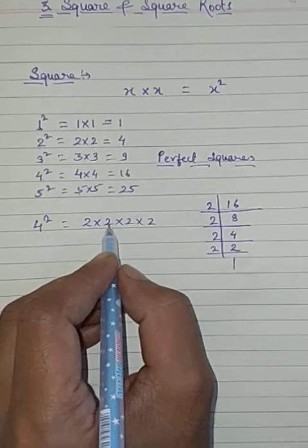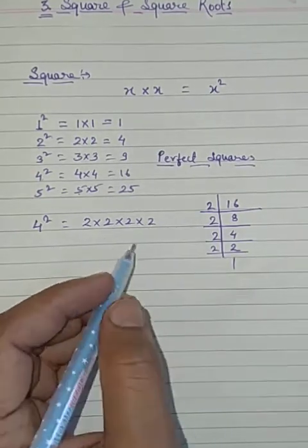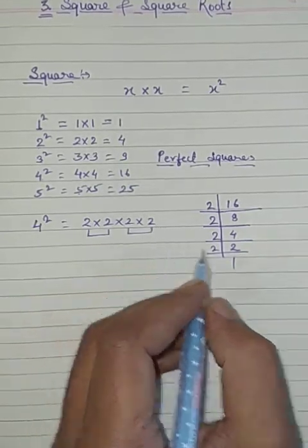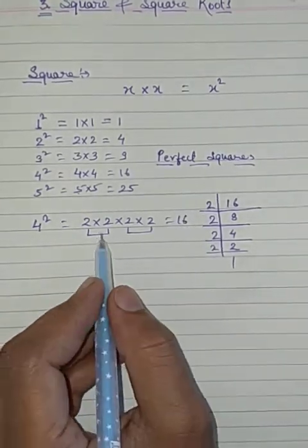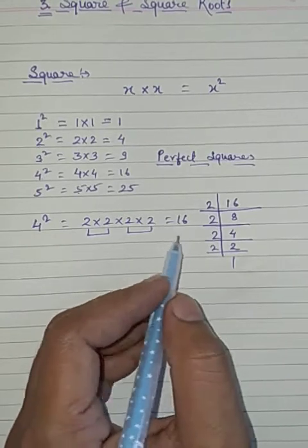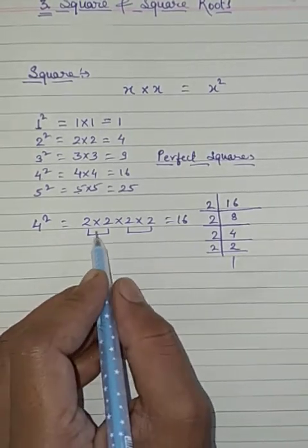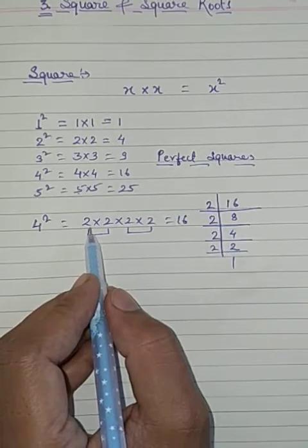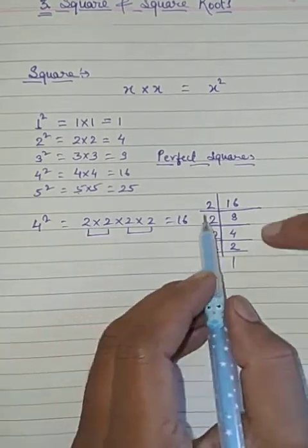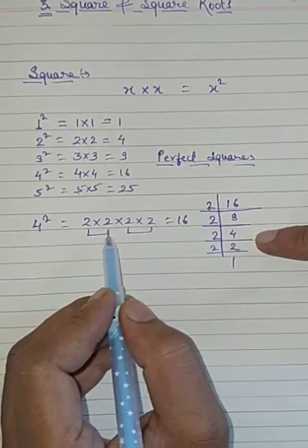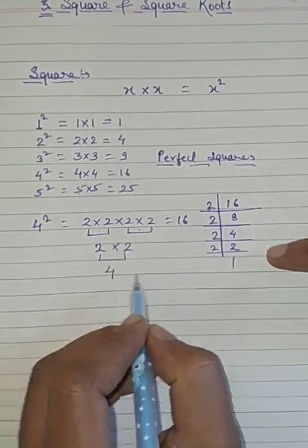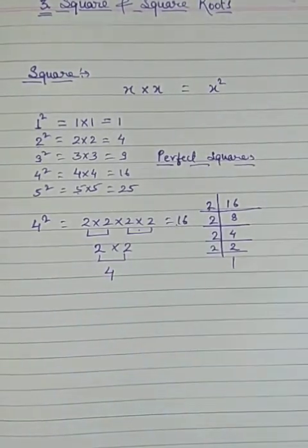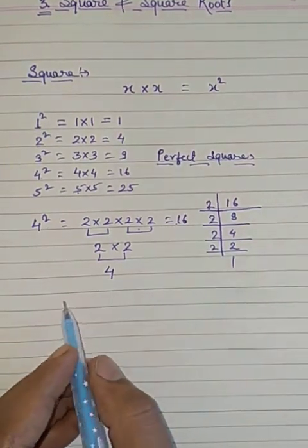With this number, we make pairs: 2×2 and 2×2. Two pairs of 2s are made. So we take one number from each pair: 2×2=4. So 16 is a perfect square. In this way, a number is a perfect square.